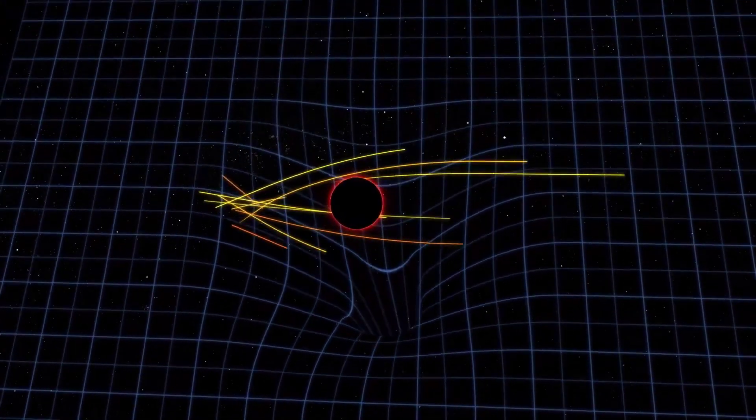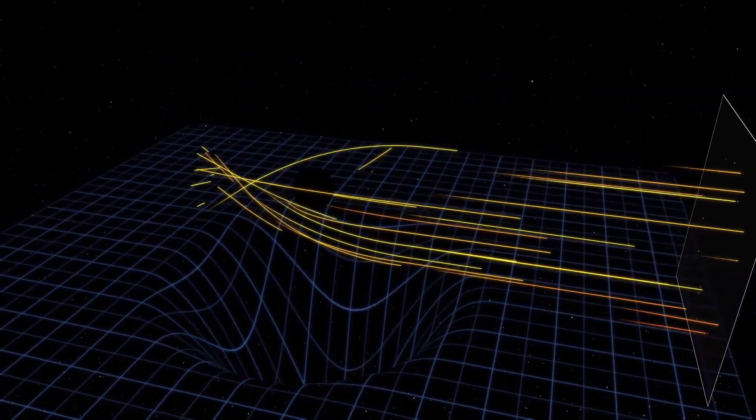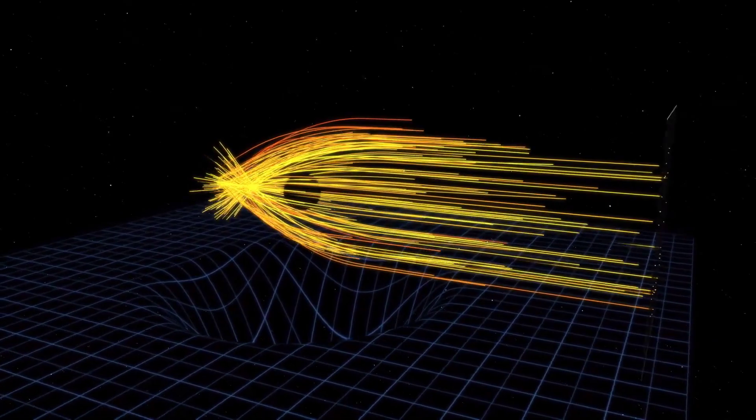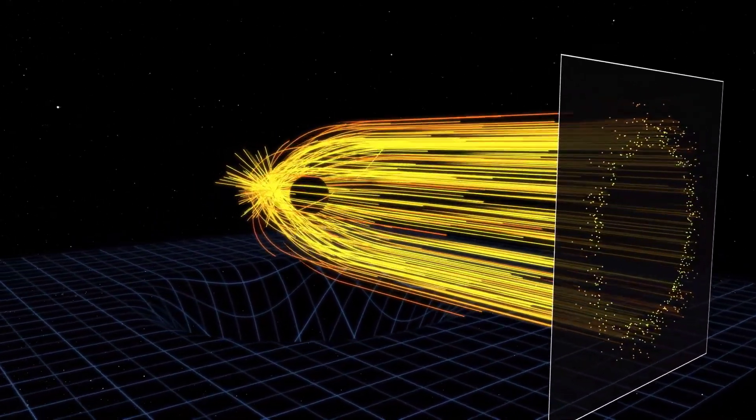When light, or photons, travel through space-time, their paths are also affected by the warping caused by massive objects like black holes. So, when light gets close to a black hole, it follows the curved space-time around it, causing the light to bend.